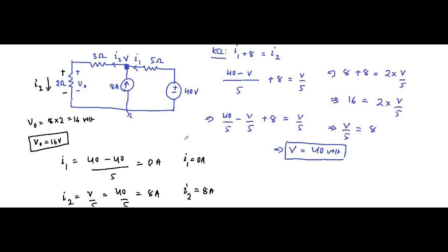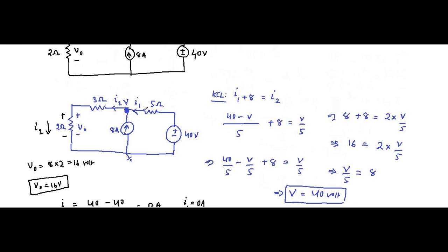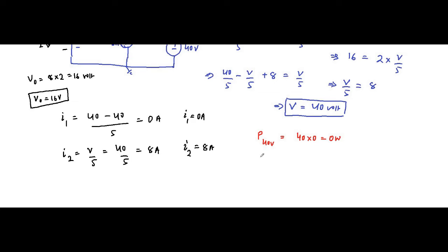Now to verify Tellegen's theorem, we find the power supplied and absorbed by each circuit element. For the 40 volt voltage source: I1 = 0A, so power = 40 × 0 = 0 watt. For the 5Ω resistor: no current is flowing through it since I1 = 0, so power is also 0 watt.